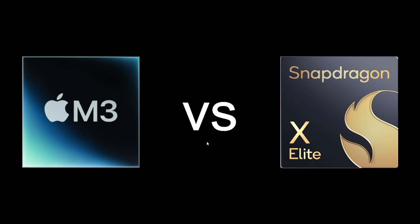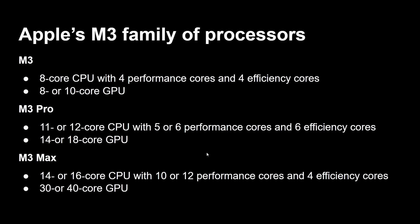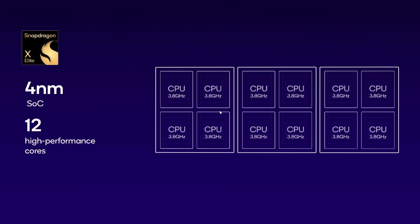We've touched on the M3 and looked at the Snapdragon X Elite in various other videos on this channel over the last week to 10 days. Now we've got some performance numbers so we can see what we're actually going to get in actual laptops. Just a reminder: Apple's M3 family has three different processors, all with the same basic CPU and GPU design but more of them. You get an 8-core CPU in the M3, 11 or 12 core in the M3 Pro, and 14 or 16 core in the M3 Max, with either a 10-core, 18-core, or 40-core GPU. The Snapdragon X Elite, by contrast, is just one processor in this first generation — a 12-core chip where all cores are high-performance cores.